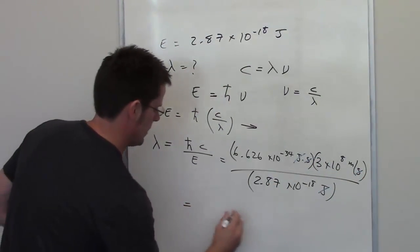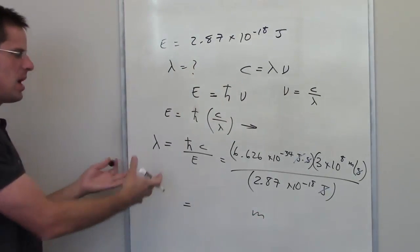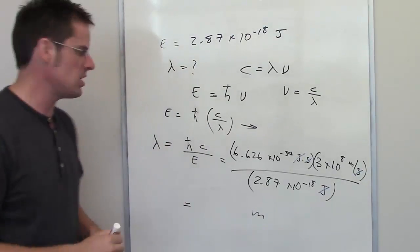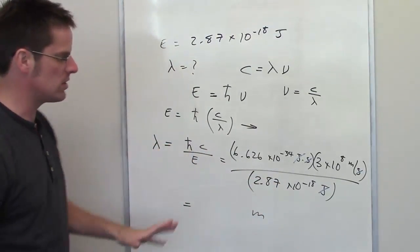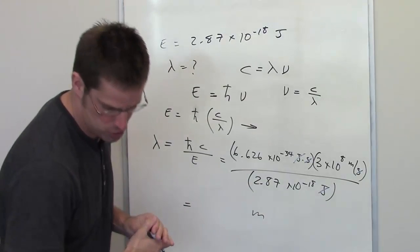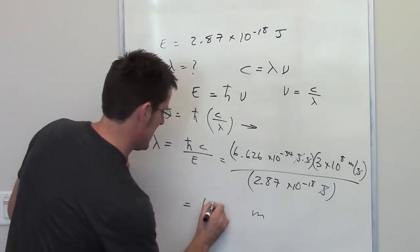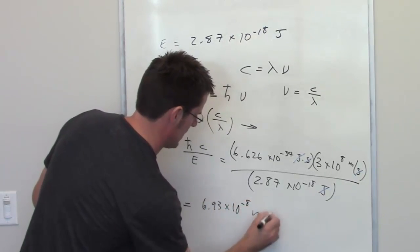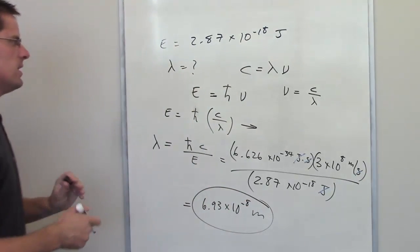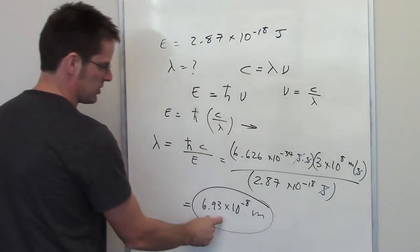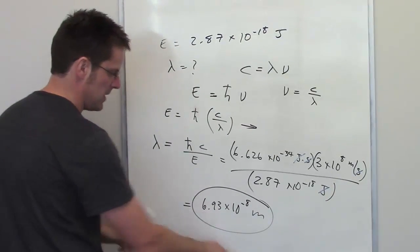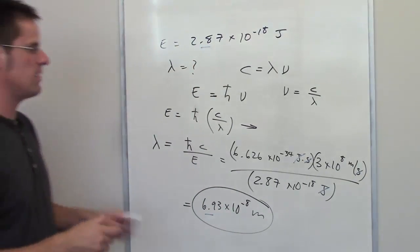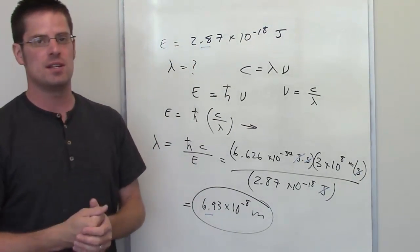We ask ourselves: is meters a proper unit for wavelength? Yes, meters is a unit of length, so that makes sense. Plug and chug with your calculators and you'll find the answer is 6.93 times 10 to the negative 8th meters. Note that we're using 3 significant figures here, which lines up with the value given that has the fewest significant figures — also 3.